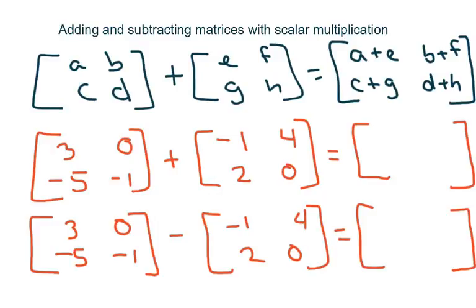Hi everyone, this is adding and subtracting matrices with scalar multiplication. We have variables a, b, c, and d and we're going to add e, f, g, and h. Basically what you're doing is adding the first row with the first row, so it's a plus c.